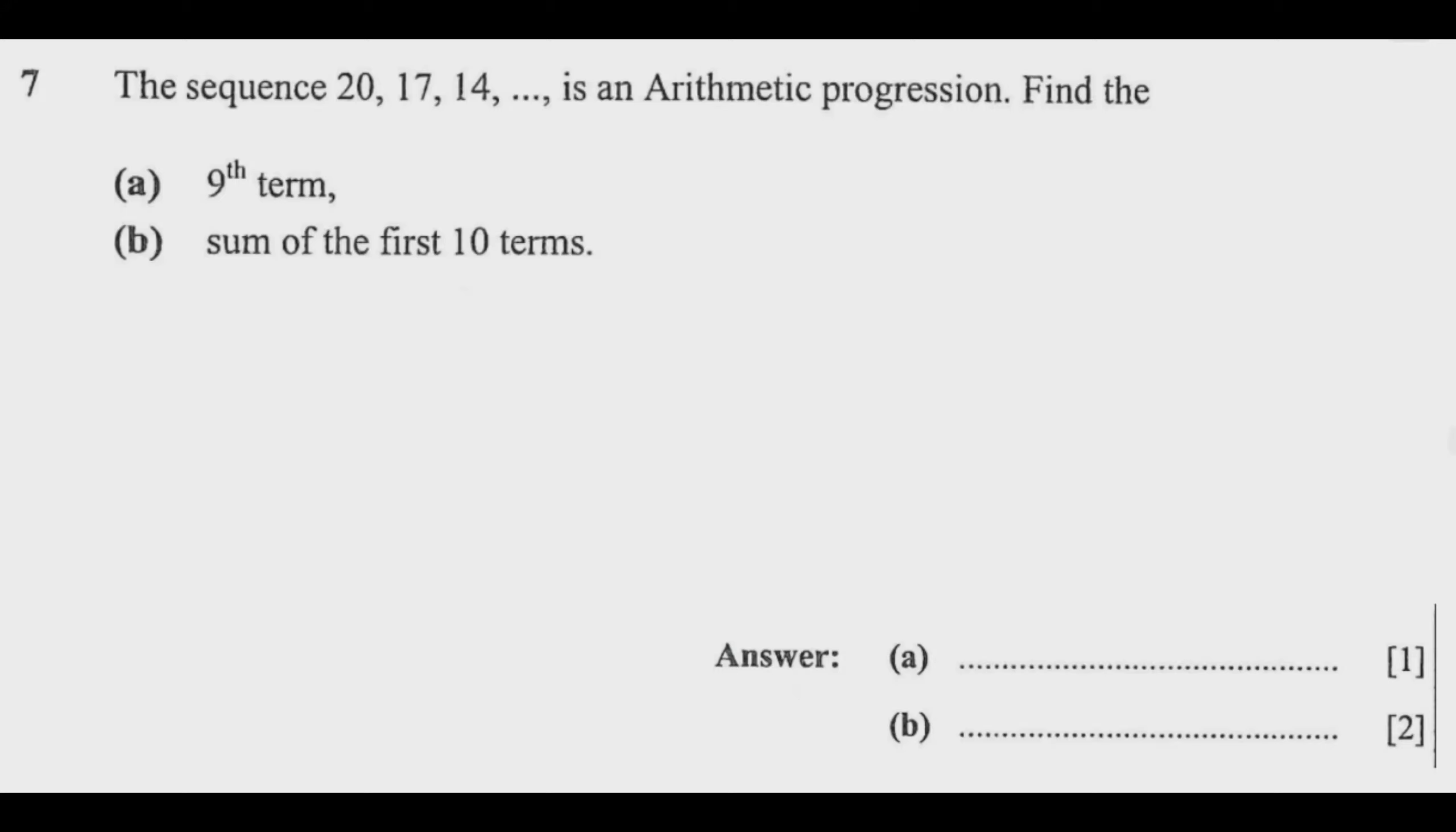To answer this question you need to remember this simple formula which we use to find question a. We're saying the nth term, where n could be the fourth term, the third term, the ninth term in this case, is equal to a the first term plus n minus 1 times the difference.